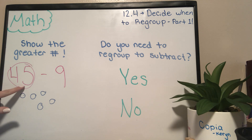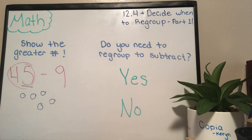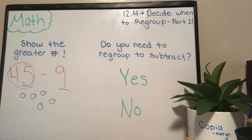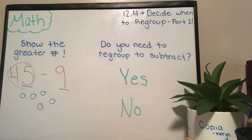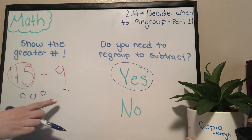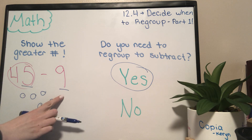Well, how many cookies do I have? I only have five cookies. And this person is asking for nine cookies. If I have five cookies, can I sell them nine? No — I would have to go back into the kitchen and bake more. It would just be a whole hot mess. So this is one of the cases where you would circle yes — I do need to regroup. I can't take nine away from five. Nine is bigger here.